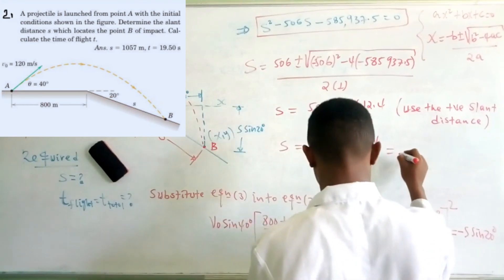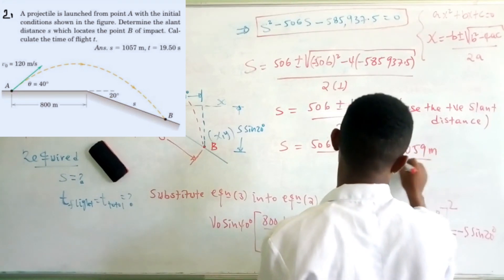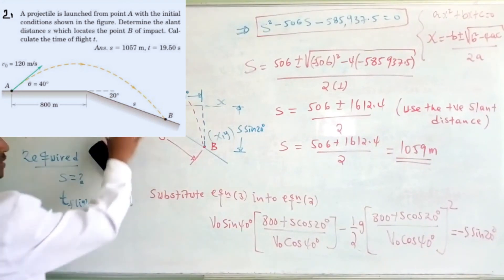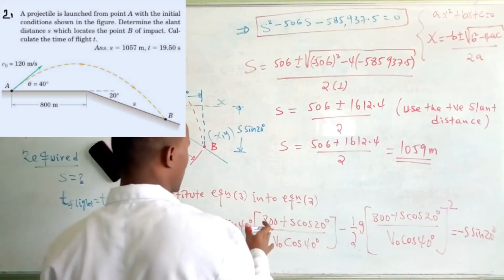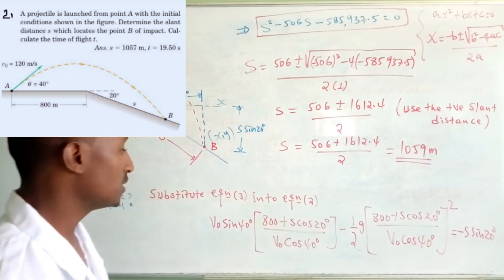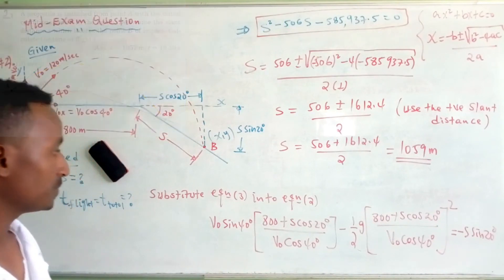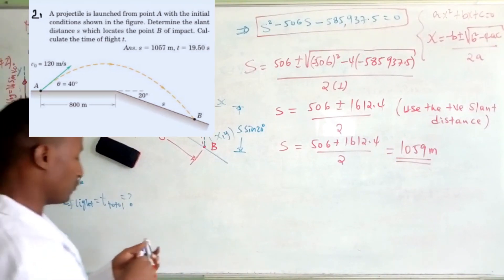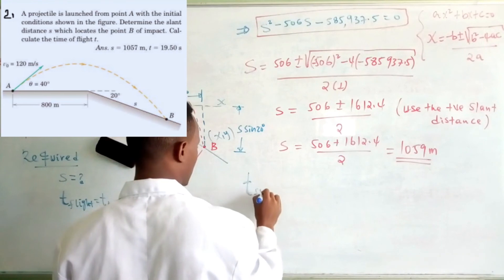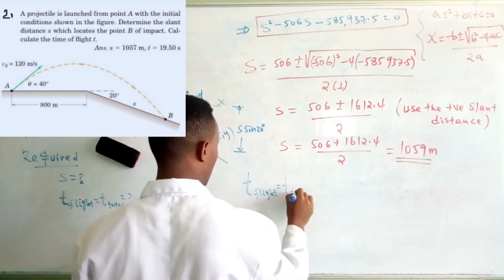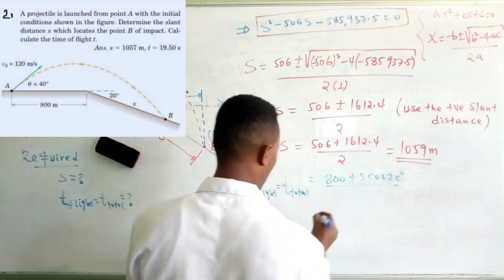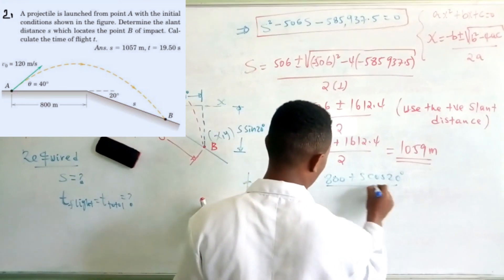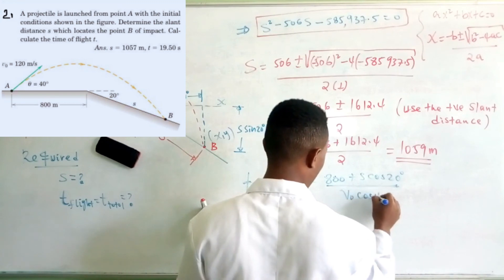Taking the positive root, the slant distance S becomes 1059 meters. The total time of flight is obtained from equation 3: T equals 800 plus S cosine 20 degrees, over v-naught cosine 40 degrees.